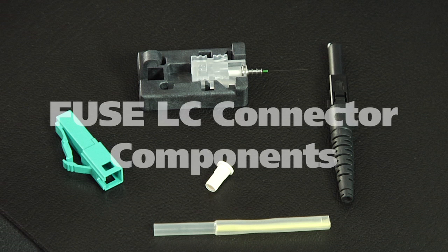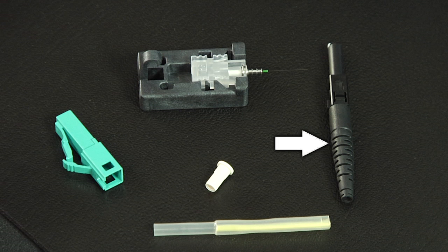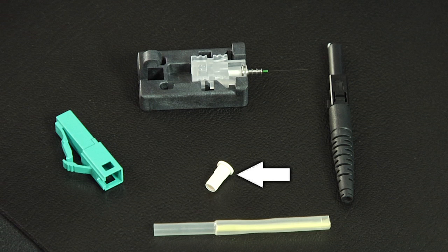The Fuse Connect LC 2 millimeter connector components: a Fuse Connect connector body holder, a Fuse Connect LC body and boot, a protective sleeve, a connector housing, and a protective end cap.